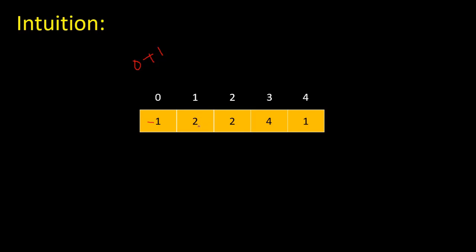The next element is two. Two minus one is one, so we multiply the element at index one by minus one, giving minus two — meaning we have element two in this array. The next element is two again. Two minus one is one, and at index one we already have minus two, which is already negative, so we don't multiply again. Then we have four: four minus one is three, and at index three we have a positive value, so we multiply it by minus one.